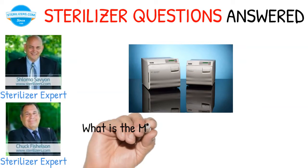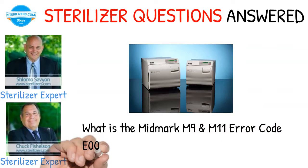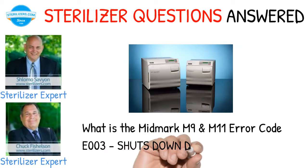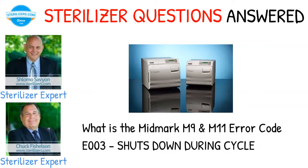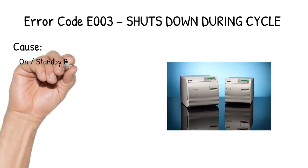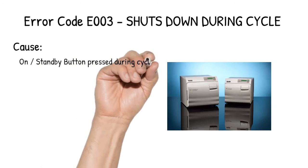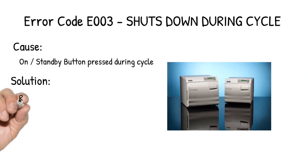What is the Midmark M9 and M11 Error Code D003? It shuts down during cycle. Cause: Standby button press during cycle.